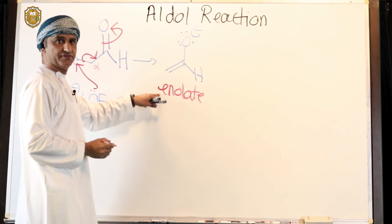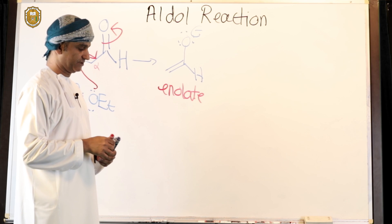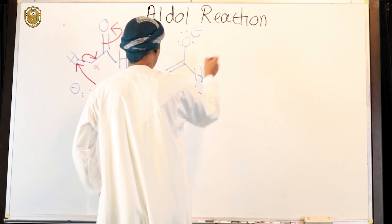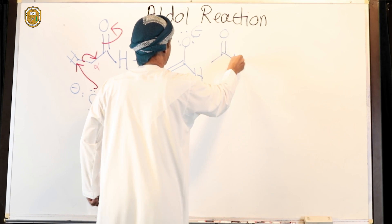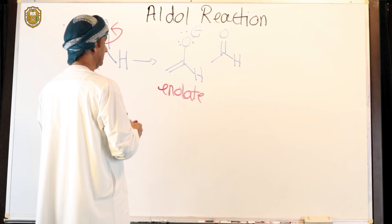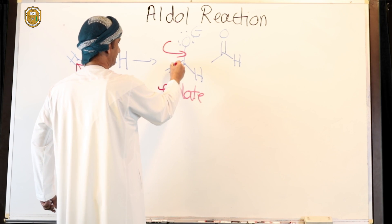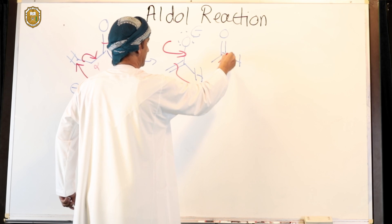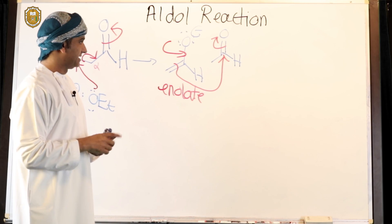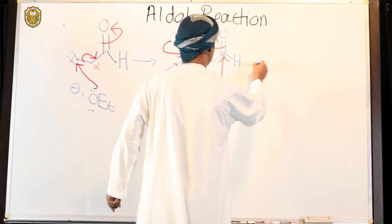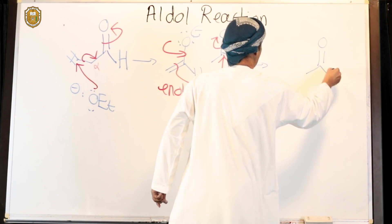The enolate then reacts with acetaldehyde itself in this condensation reaction. We can draw the structure of acetaldehyde again — the enolate does nucleophilic addition on acetaldehyde, and this is the product that is obtained.